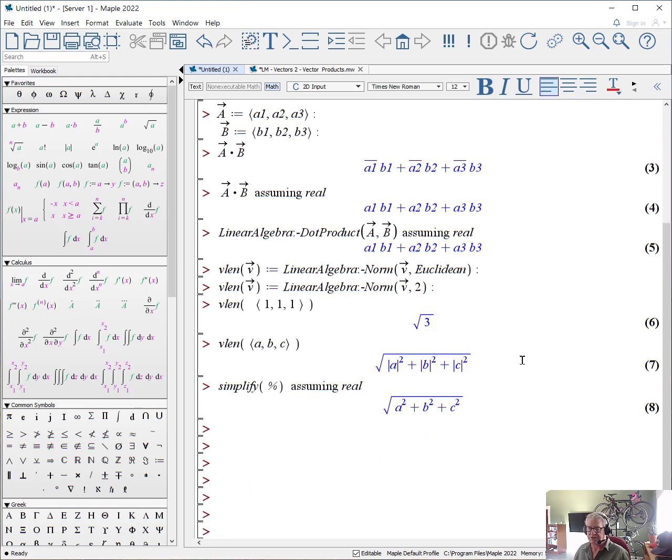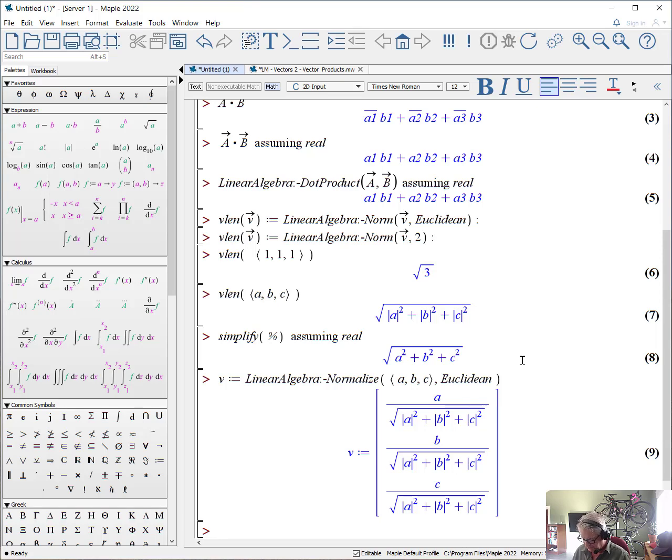Another useful procedure that you will find in the linear algebra package is the normalization function or normalization procedure. For example, what if we want to actually know the normalized value of v where v is a, b, c. We call linear algebra colon dash normalize and then we give it the vector, in this case it will be a, b, c. And again we have to say how are we going to normalize it? We're going to normalize it using Euclidean geometry and when you do you get a response that looks like that.